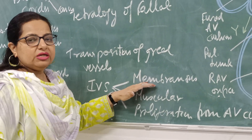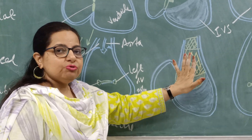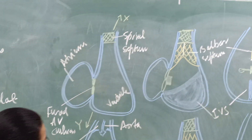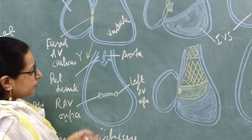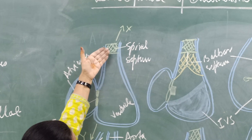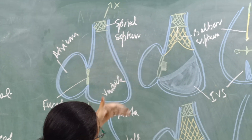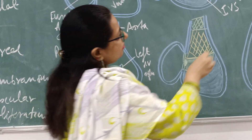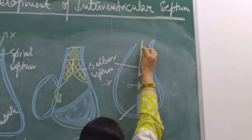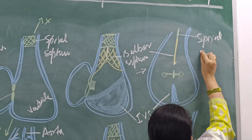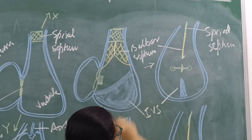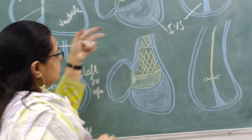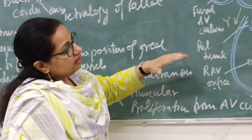The membranous portion of the interventricular septum is formed by the bulbar ridges fusing with each other and growing downwards. As you can see, X and Y denote the sections at which this has been taken to show you the ventricular cavity. You can appreciate the spiral septum, the bulbar septum lower down, and the AV cushions forming the right and left atrioventricular orifices. In this section you can make out the spiral septum, the bulbar septum in yellow, and the proliferation from the AV cushions taking place from the right and left AV orifices and the fused AV cushions. So the membranous part is derived from the bulbar septum.